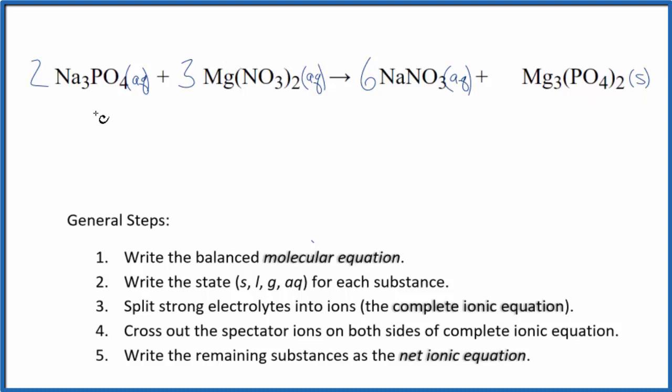In fact, when these substances react, this will be a solid, so it'll be a precipitate, fall to the bottom of the test tube. So we have the states, now we can split the strong electrolytes into ions and that will give us the complete ionic equation.